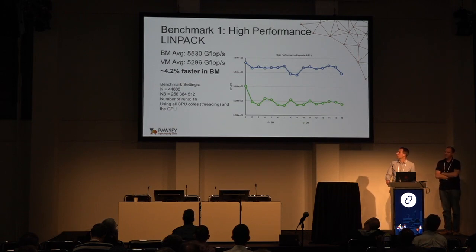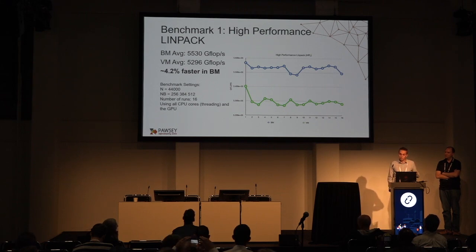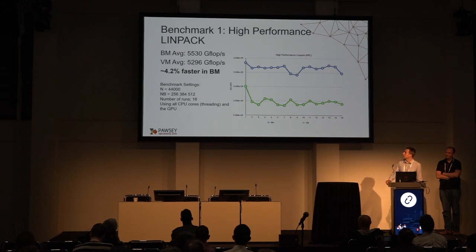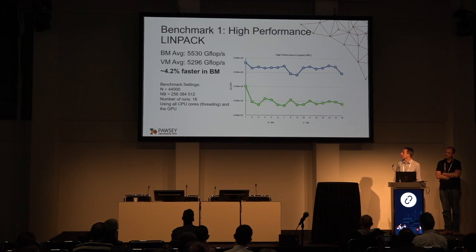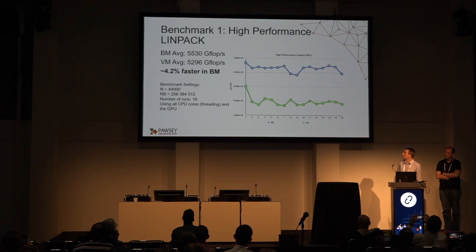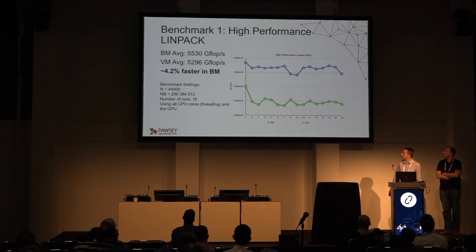The first benchmark we ran is HPL — High Performance Linpack — a well-known floating-point benchmark. The bare metal is, on average, 4% faster than the virtual machine: around 5,500 GFlops versus 5,200 GFlops. HPL is very GPU-intensive but not ultra-CPU intensive, which is relevant to later results.